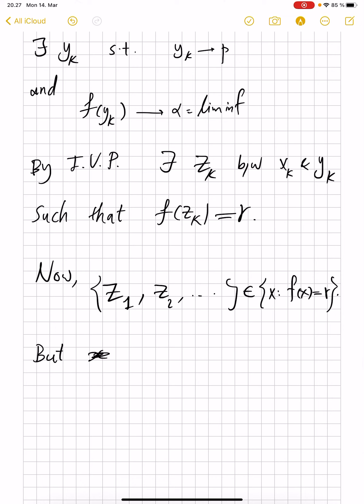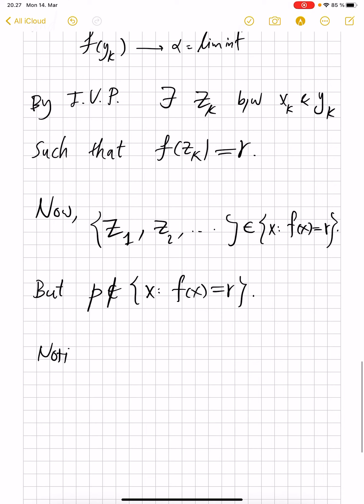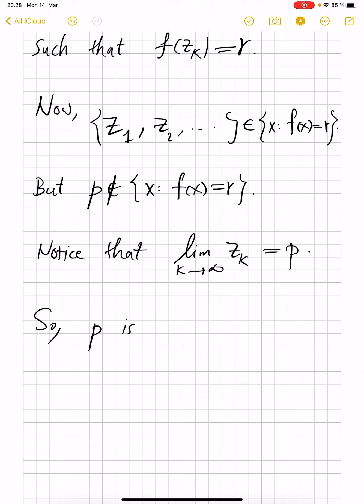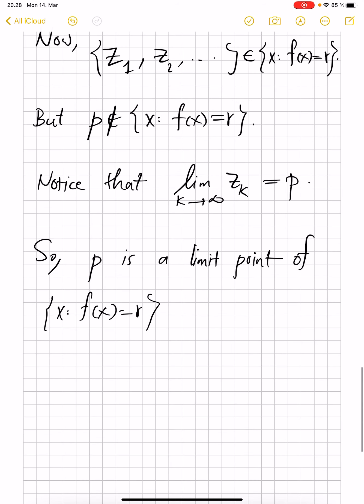But p is not in the set x where f(x) is equal to r by that choice of r. Notice that limit of z_k as k goes to infinity is equal to p because z_k is between x_k and y_k, and both x_k and y_k converge to p. This shows that p is a limit point of {f(x) = r}. By the way, f(x) equal to r could be a much larger set. It doesn't have to be just this discrete set of z_k's. We know that it at least contains these z_k's and these z_k's converge to p. So p is definitely a limit point of the set.